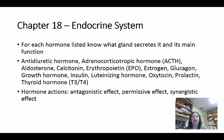Antidiuretic hormone, abbreviated ADH, decreases water loss by telling the kidneys to hold on to water, which decreases urine production. Remember this is made by the hypothalamus but released by the posterior pituitary gland — the posterior pituitary doesn't make hormones, but it does release them. ADH is one of the hormones it releases.